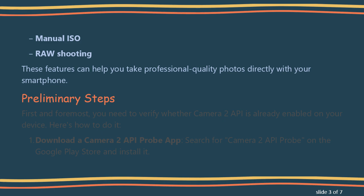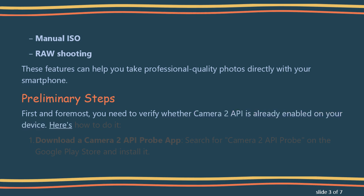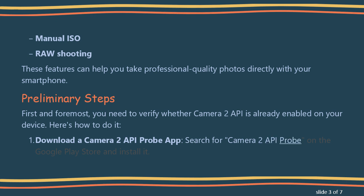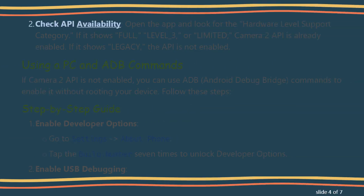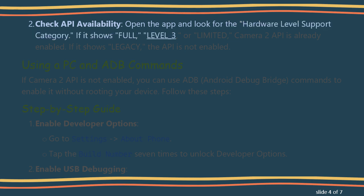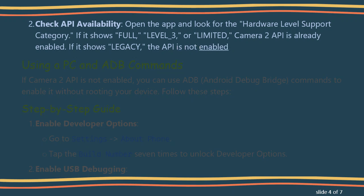Preliminary Steps. First and foremost, you need to verify whether Camera 2 API is already enabled on your device. Download a Camera 2 API probe app — search for 'Camera 2 API probe' on the Google Play Store and install it. Open the app and look for the Hardware Level Support category. If it shows Full, Level 3, or Limited, Camera 2 API is already enabled. If it shows Legacy, the API is not enabled.